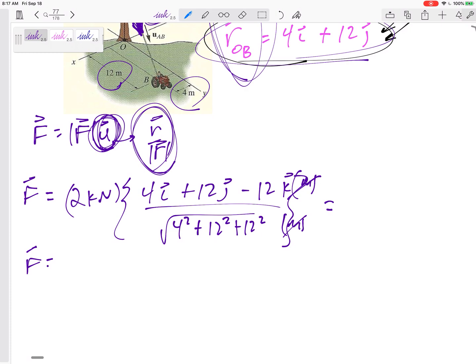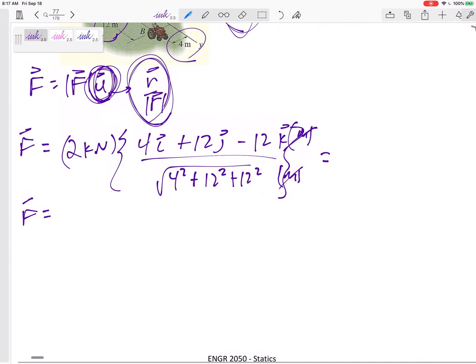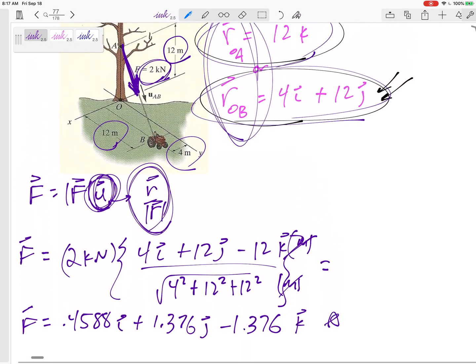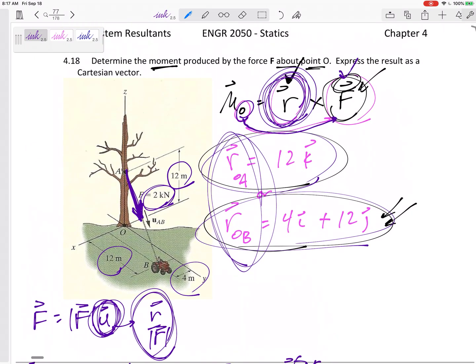Alright. So this force right here, I might run out of room, is 0.4588 in the I plus 1.376 in the J minus 1.376 in the K. Alright. That was almost a problem in itself, is just getting that force written in its component form.